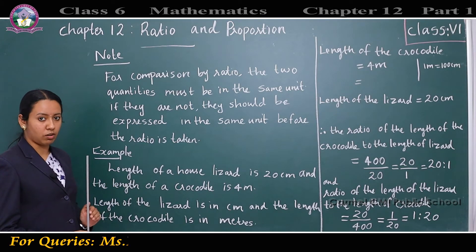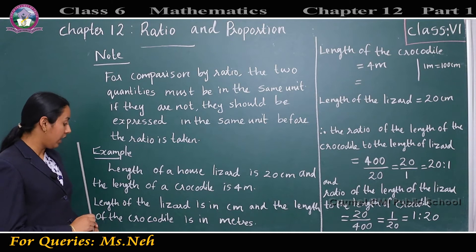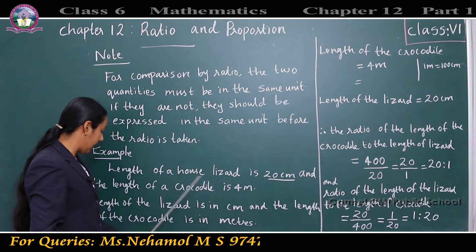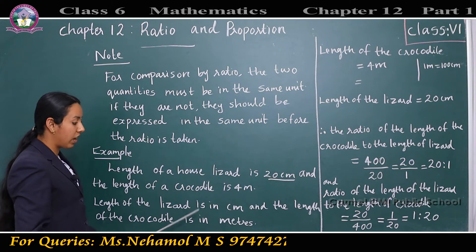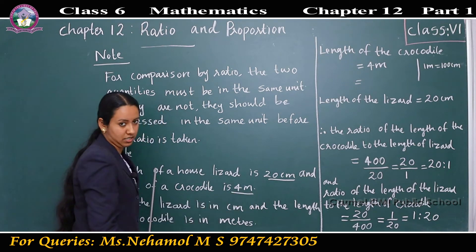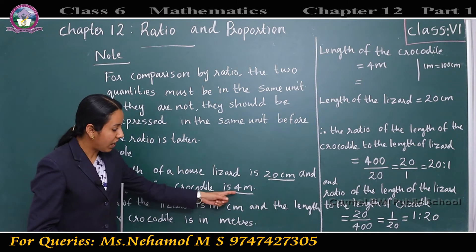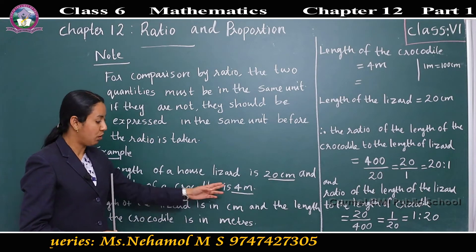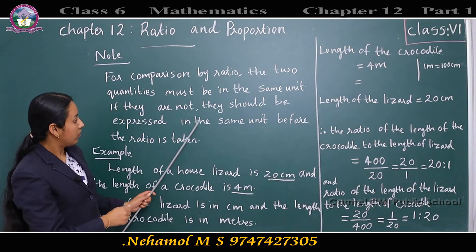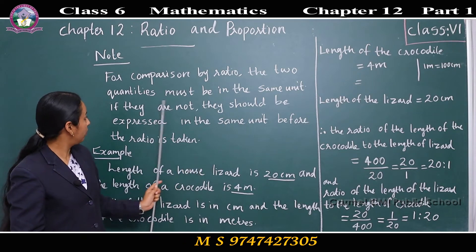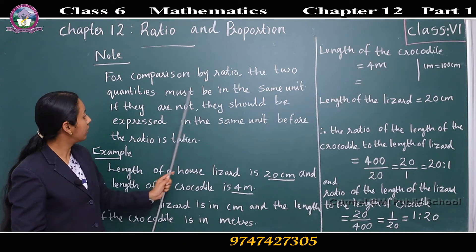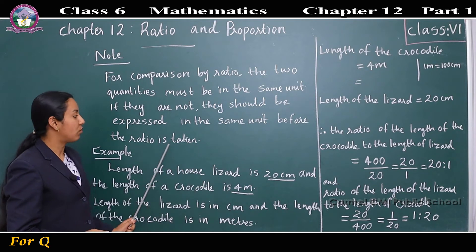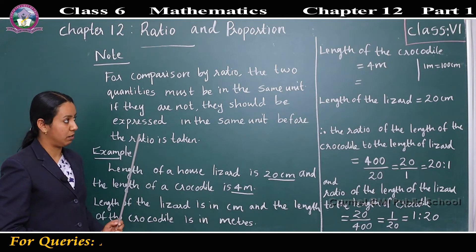No, it is absolutely wrong. Why? Because the length of the lizard is in centimeters and the length of the crocodile is in meters. If the values are given in different units, we must first express them in the same unit before taking the ratio.